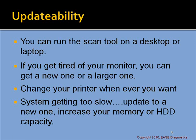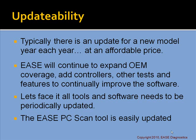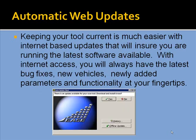Another important power feature is updatability. You can run the scan tool on a desktop or laptop and update them whenever you like — get a new or larger monitor, run two monitors, change your printer, or update to a faster system. You can increase your memory or hard drive capacity. As for software updatability, there's typically an update for new model years every year at an affordable price. We will continue to expand OEM coverage, add controllers, and add test features to continually improve the software. The Ease PC Scan Tool has automatic web updates — with internet access, you'll always have the latest bug fixes, new vehicles, and newly added parameters at your fingertips.